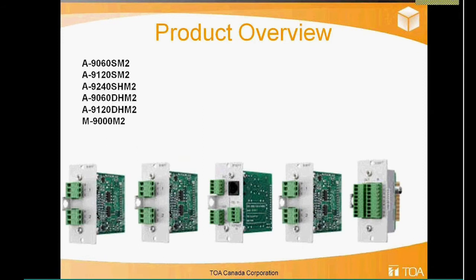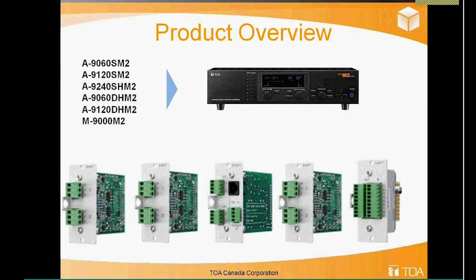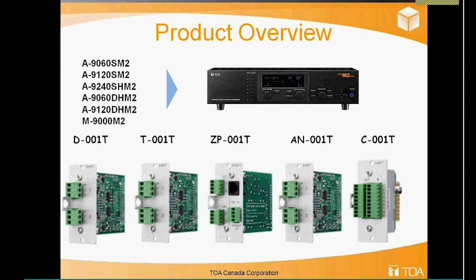The 9000 M2 series comes in various models: the 9060 and 9120 S series — single 60 watt or single 120 watt output units — with preamp outs on the second channel to feed power amps, and the 240 watt version as well. The 960 and 9120 D8 series are dual 60 or dual 120 watt, giving you two zones on board to feed two paging outputs or two different locations. There's also the popular M9000 M2 mixer unit with no amp on board, giving you two line outputs to go to your power amps.